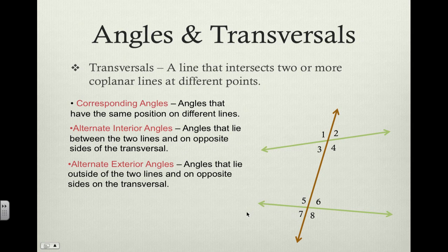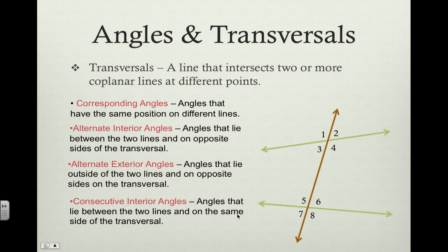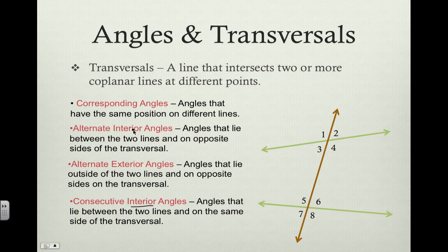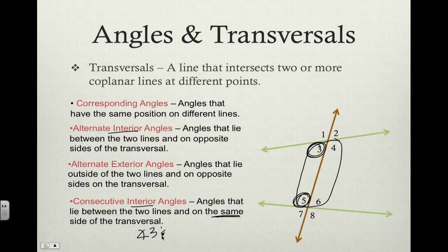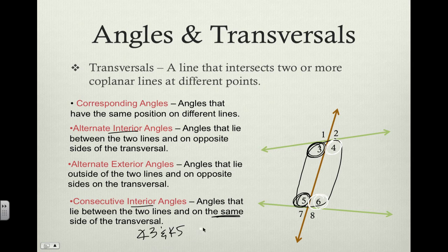The last type of angle is consecutive interior angles. Consecutive interior angles lie in between the two lines — similar to alternate interior angles — but they are on the same side of the transversal. Interior means we're looking at those four angles, but specifically they lie on the same side. So angle three and angle five would be consecutive interior angles. And then we also have angle four and angle six — that would be our other pair.